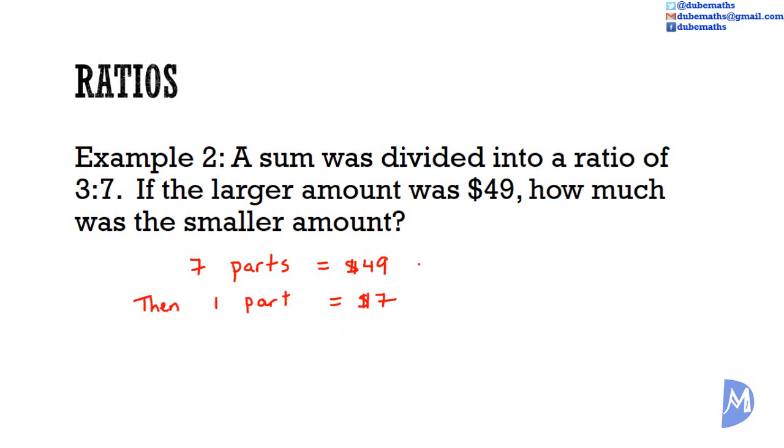So we are asked, how much was the smaller amount? The smaller amount, that is 3 parts. 3 parts is equal to 3 multiplied by $7. It's equal to $21. The answer is $21.